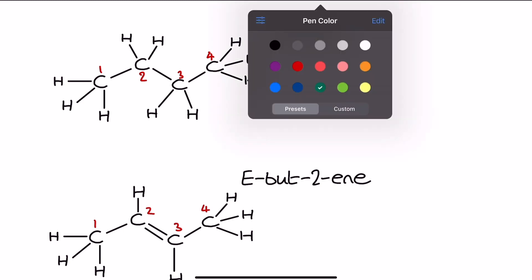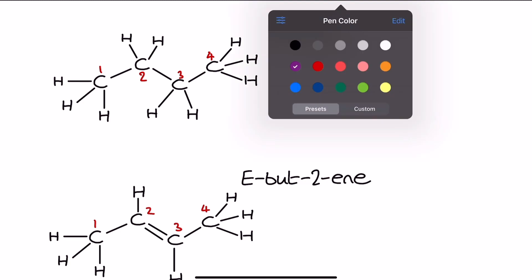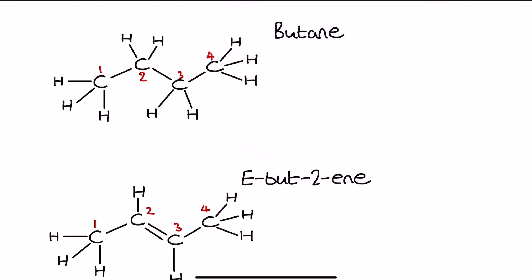So I'm just going to change my pen color there. First up with butane we've got a straightforward four carbon chain and moving from left to right we would write the structural formula as CH3 CH2 CH2 CH3, and that's as simple as we can really get with this.